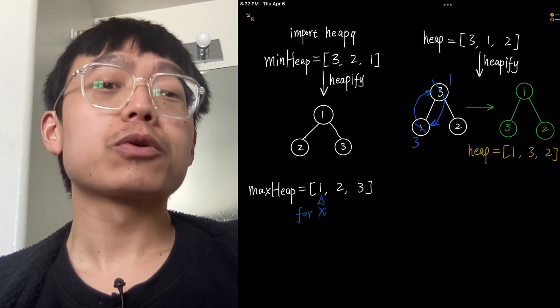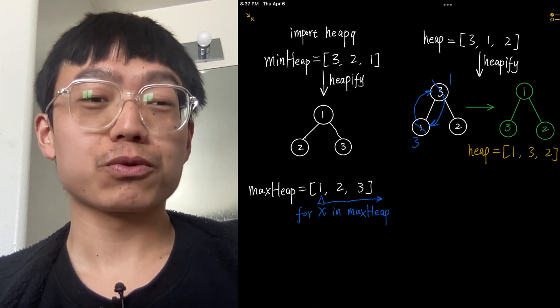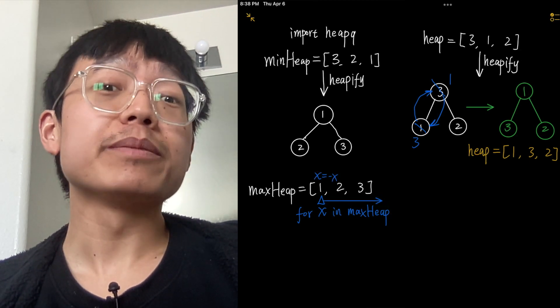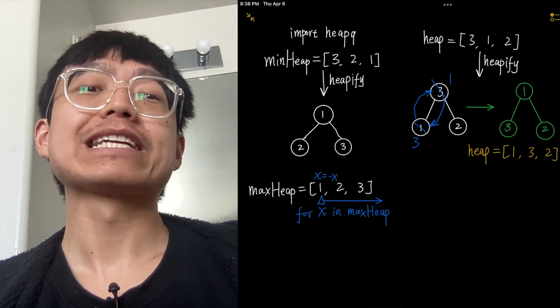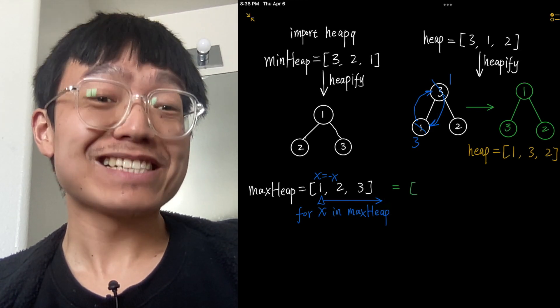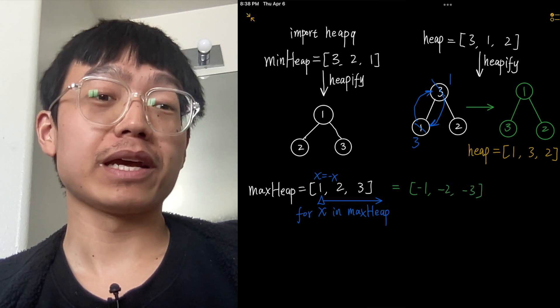First, we create a list maxHeap with initial values [1, 2, 3]. Our trick is to multiply each element by -1. We multiply each element in the maximum heap by -1 using a list comprehension: [-x for x in maxHeap].